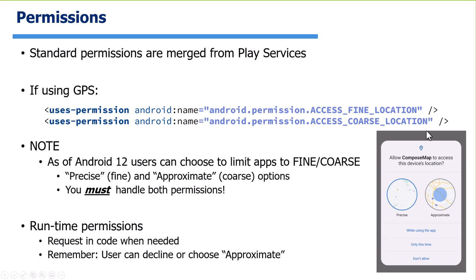Any dangerous permissions need to be double-checked at runtime with the user. It pops up a dialog asking whether they want precise or approximate location. For the car finder application we're developing, we'll need precise information. If they choose approximate, it's not super useful - maybe useful only if you're saying 'within this 10-block radius, here's where your car is parked.' You must handle both permissions since the user can choose either one.